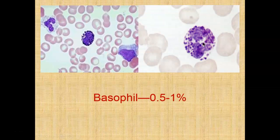Here are the basophils. Notice the purple-stained granules — not only is the nucleus stained dark purple, but the granules are as well. Your basophils are the least abundant of all leukocytes. Their numbers increase dramatically during allergic responses because their primary job is to release histamine into infected tissues or tissues responding as part of the inflammatory response. Those are your granulocytes: neutrophils, eosinophils, and basophils.